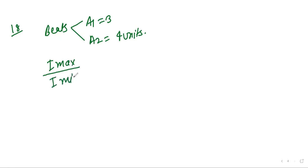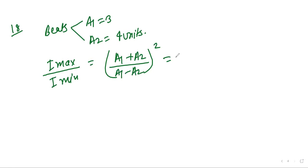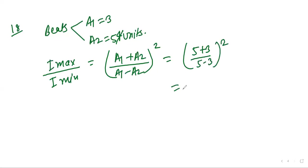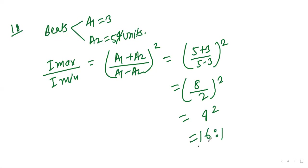The formula is: I_max / I_min = (a₁ + a₂)² / (a₁ − a₂)². Putting the values — wait, correcting: a₁ = 3 and a₂ = 4, so a₁ + a₂ = 7... actually using 5 and 3: (5 + 3)² / (5 − 3)² = (8/2)² = 4² = 16. So the answer is 16:1, where 16 is maximum intensity and 1 is minimum intensity.